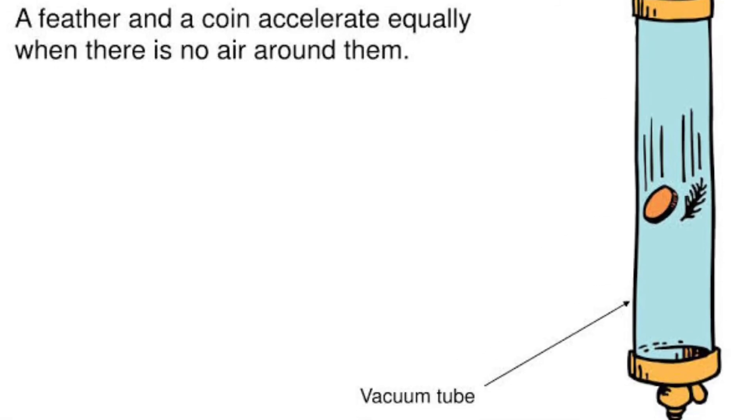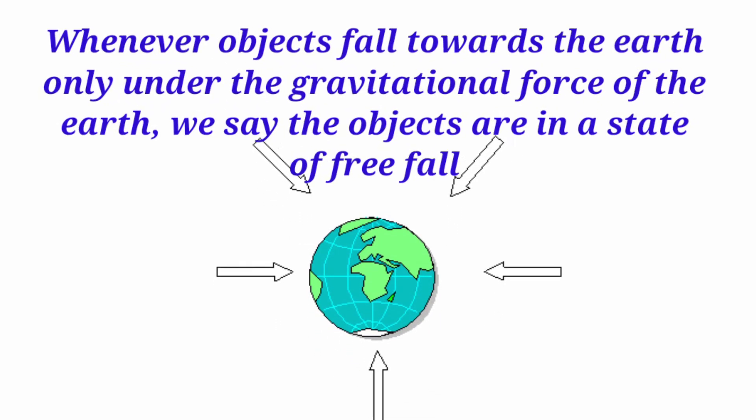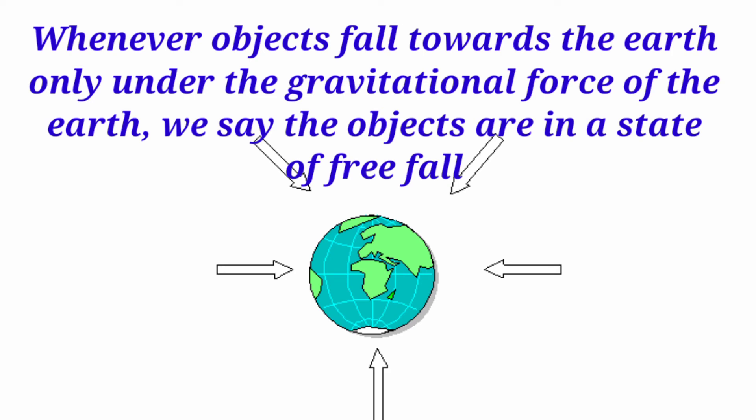In this picture you can see that a coin and a feather accelerate equally when there is no air around them, meaning vacuum is inside. I hope now you understand the meaning of free fall. Whenever objects fall towards the earth only under the gravitational force of the earth with no other forces acting on it, we say the objects are in a state of free fall.